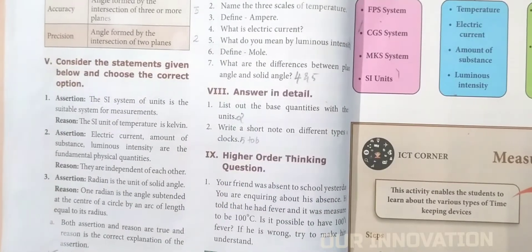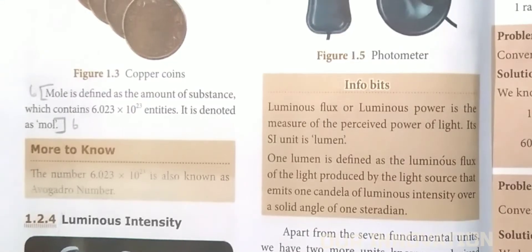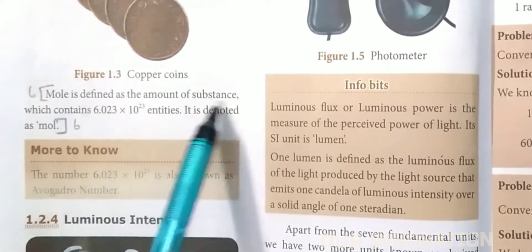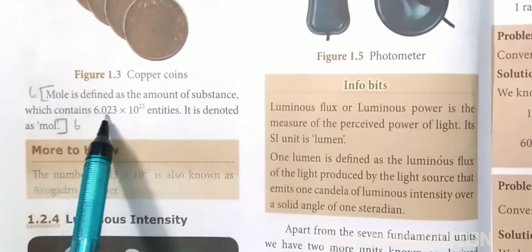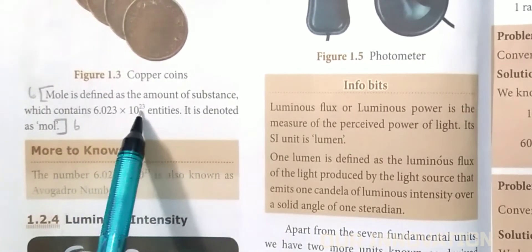Define mole. Page number 4: Mole is defined as the amount of substance which contains 6.023 into 10 power 23 entities. It is denoted as mol.